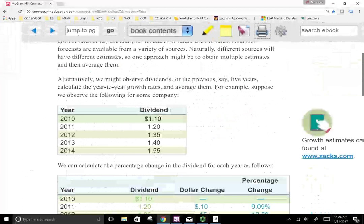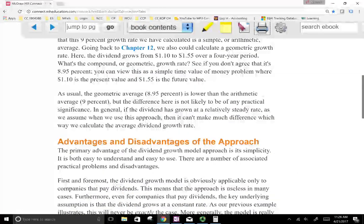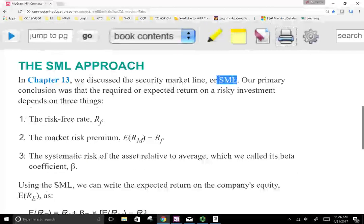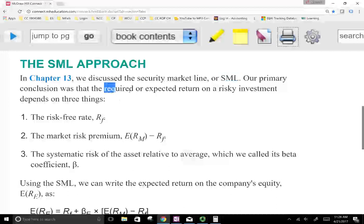In this session, we're going to look at the cost of equity. However, we're going to be looking at the SML line, the security market line, which is something that we looked at in the prior chapter. So what we concluded from the SML line is that the required or the expected rate of return on a risky investment depends on three things.